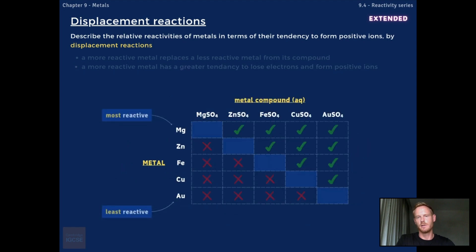By referring to the reactivity series, we can predict the results of a displacement reaction. Elements higher up the list will displace those lowered down because they have a greater tendency to lose electrons and form positive ions. Therefore, magnesium displaces zinc, iron, copper, and silver from aqueous solutions of their salts.